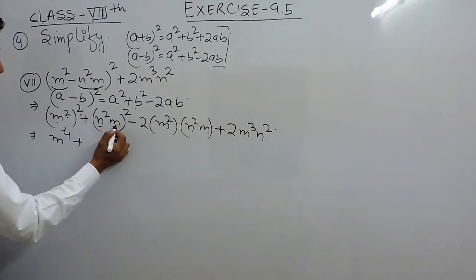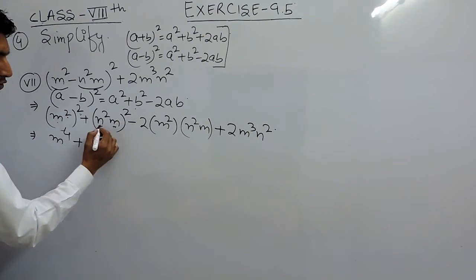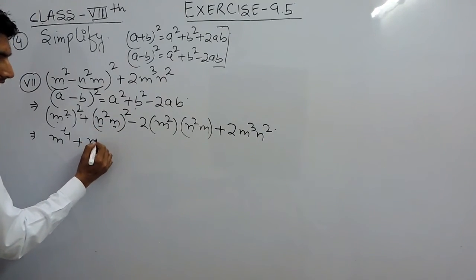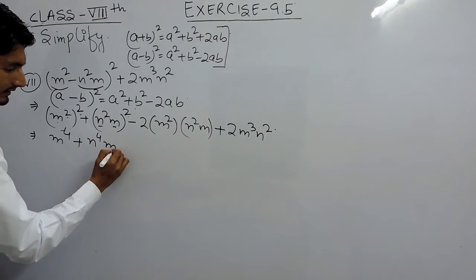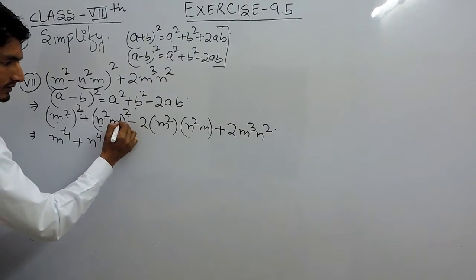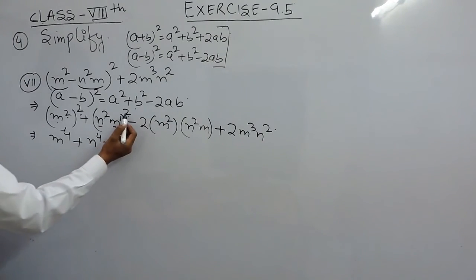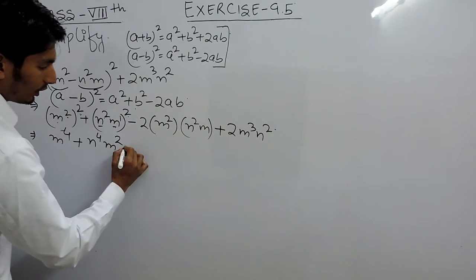When I have to solve n, the power gets multiplied, it will become 4, and this will become 2 because the power on m is 1. So 2 into 1 is 2. Now I have to solve this.